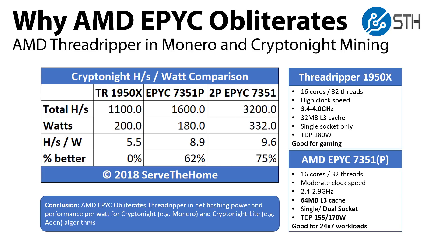AMD EPYC completely obliterates Threadripper in both net hashing power per CPU and on a performance-per-watt scale for CryptoNight — which covers Monero among others — and CryptoNight Lite, which covers Aeon algorithms. The AMD Threadripper 1950X is a great gaming and workstation rig, but we wouldn't recommend it for Monero mining. We're helping lots of companies monetize their server farms using Monero mining, so feel free to drop us a line if you have servers you want to put online. We have private pools, private miners, and Docker and VM images you can deploy on a large-scale cluster.